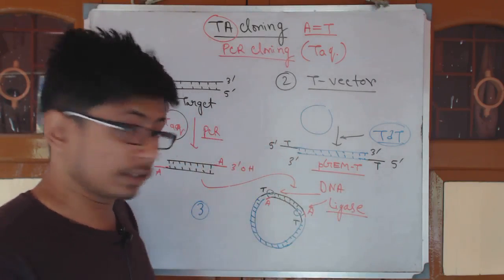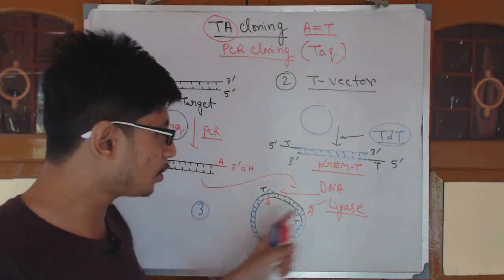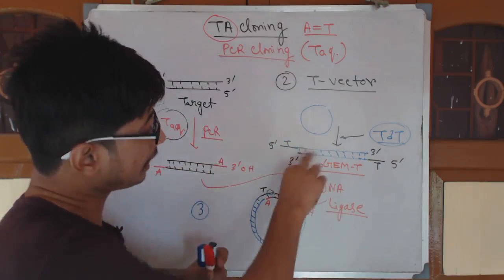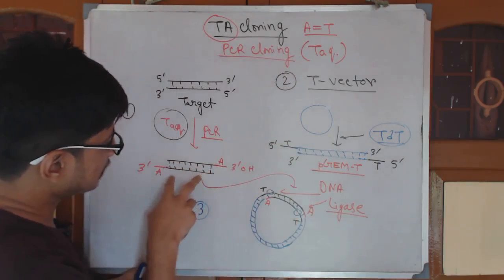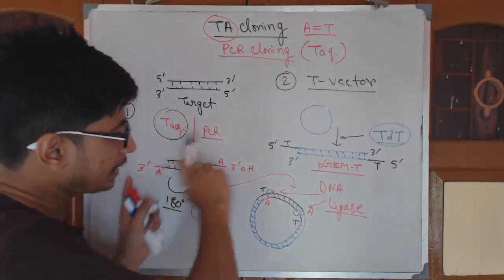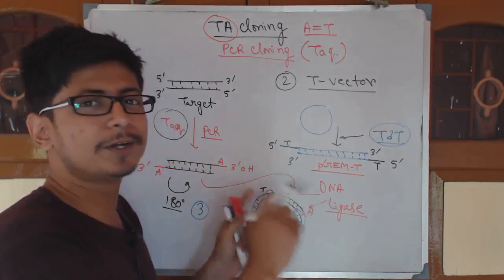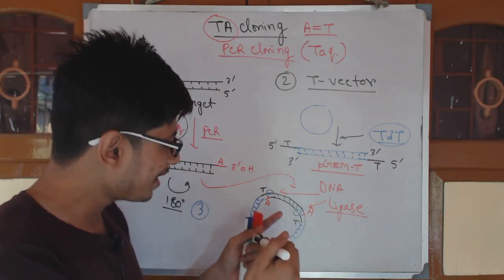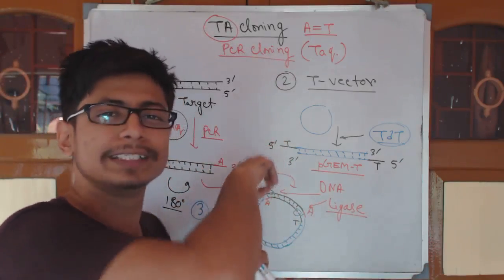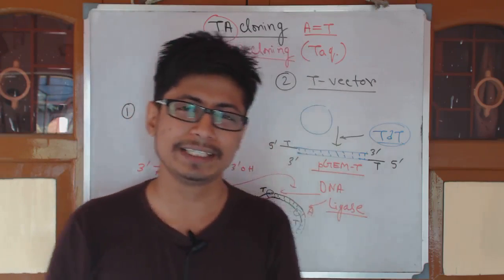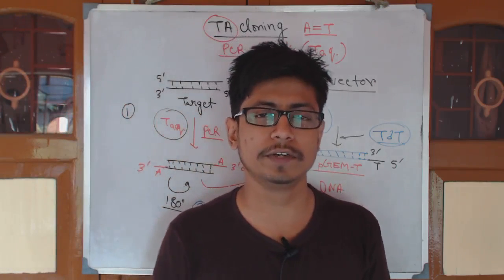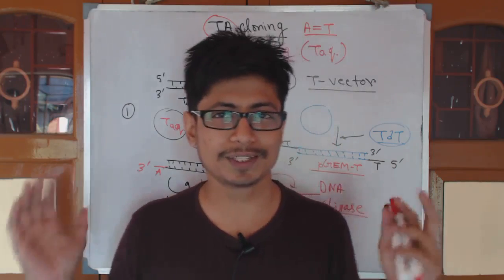The only drawback — and it is a big drawback — about TA cloning is that this cloning cannot be directional in nature; it can happen in both directions. If you flip the target DNA 180 degrees, it is also going to bind to the vector — it will bind either way. So directional cloning is not possible, and there is always a 50-50 chance of exactly where and how your gene is going to be inserted inside the vector. That is one major drawback with TA cloning. Otherwise, it is a very good approach compared with conventional subcloning systems.